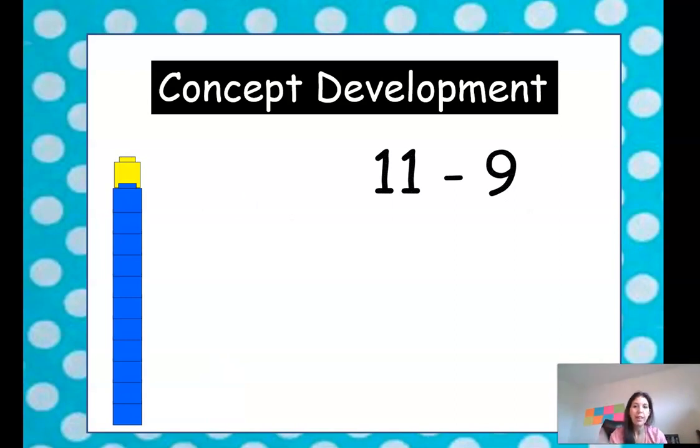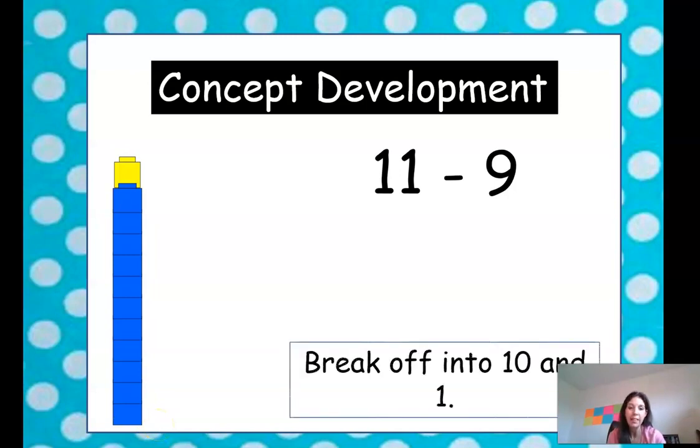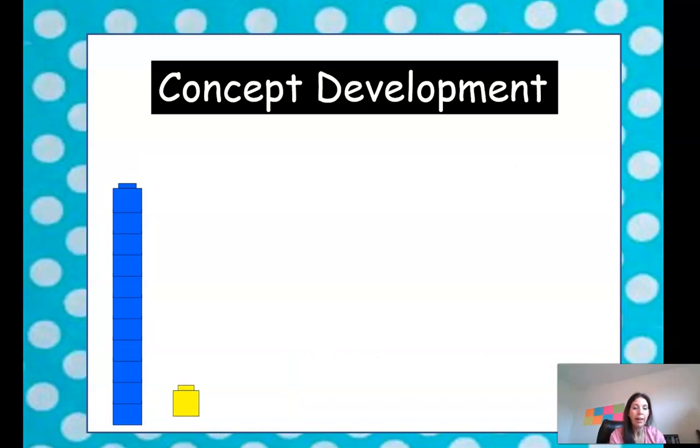Look at this problem. 11 minus 9. So we have 11 here. 1, 2, 3, 4, 5, 6, 7, 8, 9, 10, 11. And we're going to take away, well, first let's separate it. Break off into 10 and 1.